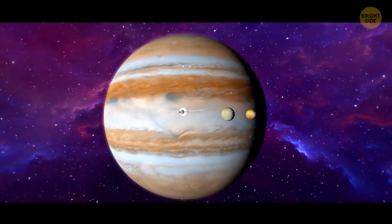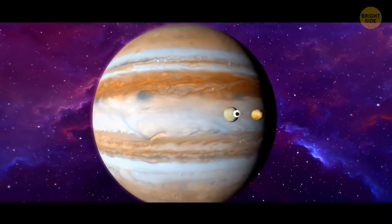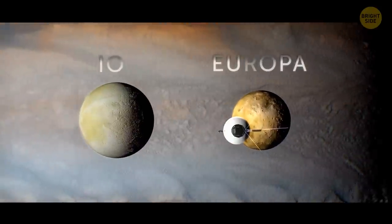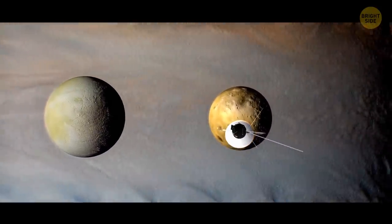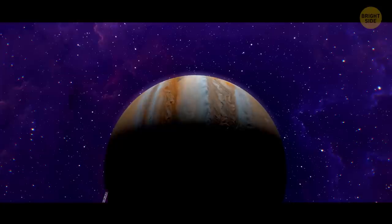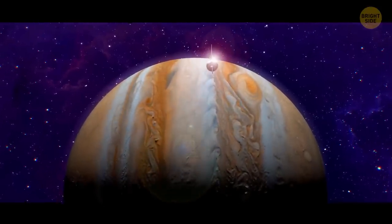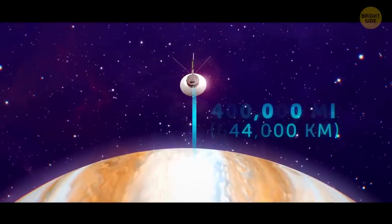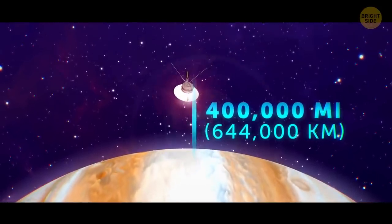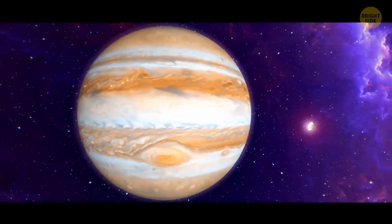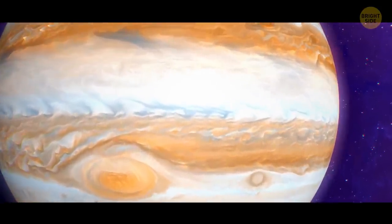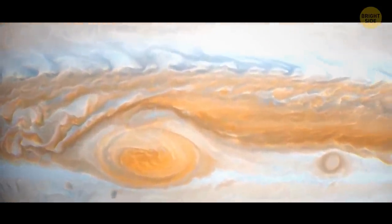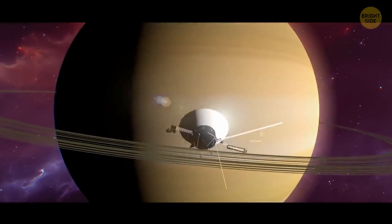Two years after its launch, Voyager 2 started transmitting the first images of Jupiter. The space probe provided scientists with much-needed information about Io and Europa, some of the largest of Jupiter's moons. Then the space mission passed by the gas giant itself. The distance between the spacecraft and the planet was around 400,000 miles. That's when the probe noticed some changes in the shape and color of the great red spot. It's an enormous, long-lived storm system, like a hurricane on Earth, but much, much larger. Two years later, Voyager 2 reached Saturn. It discovered spokes and kinks in some of the planet's rings.